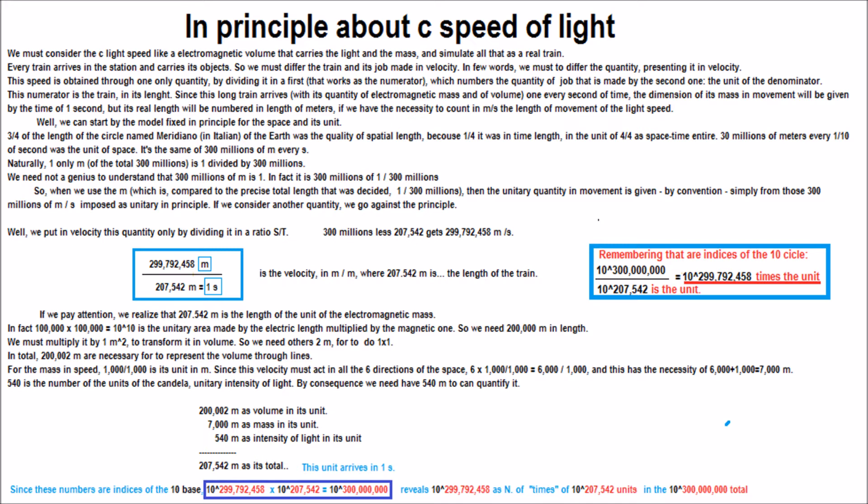This numerator is the train, in its length. Since this long train arrives with its quantity of electromagnetic mass and a volume one every second of time...